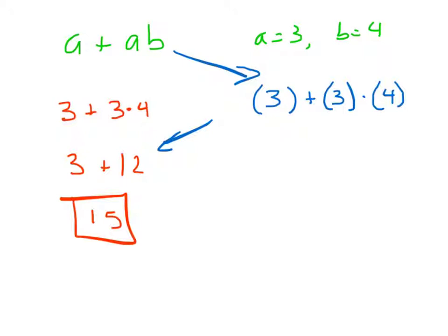when we have a mixture of letters and numbers and positive and negative symbols, it makes a big difference. Answer will be the same. 3 times 4 will be 12. 3 plus 12 will equal 15.